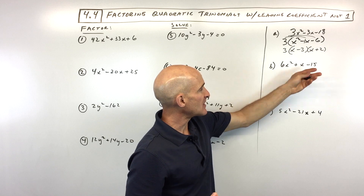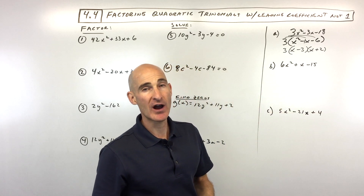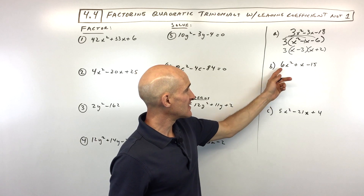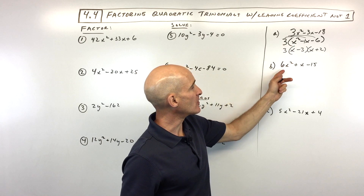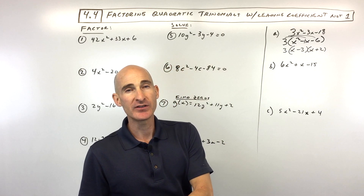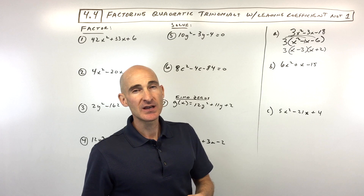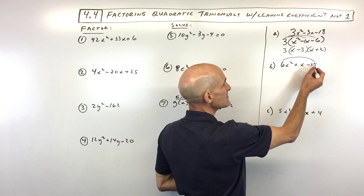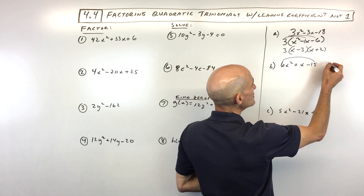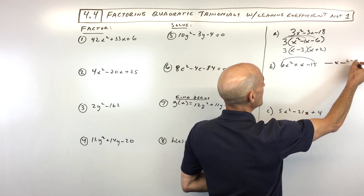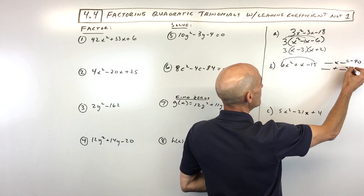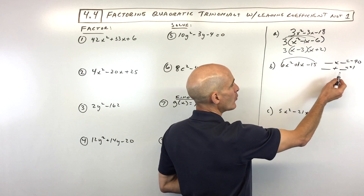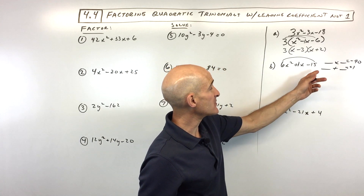The next type of problem is when there's not necessarily a greatest common factor you can factor out. You always want to look for that first, but in this case there's nothing we can divide out of all three terms. So the leading coefficient is not one. There's the trial and error method, but another method — a little more process oriented — is you take a times c. You take the six times negative 15 and ask: what two numbers multiply to negative 90 but add to positive one, the middle coefficient? Once you figure that out, the rest is easy.